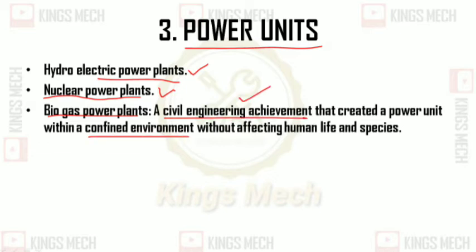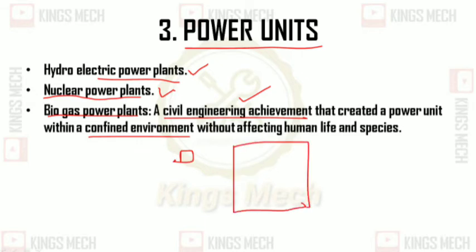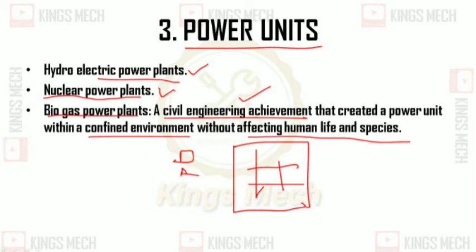One confined environment example is the Mercury Hydroelectric Power Plant. Nuclear Power Plant requires a large area. In the Biogas Power Plant, small-scale setups within buildings are possible — everything involved is part of the bio gas power plant system. Without affecting human life and species, it is a civil engineering achievement.